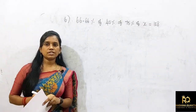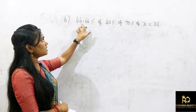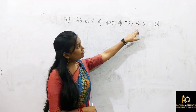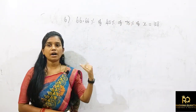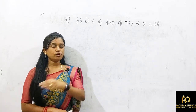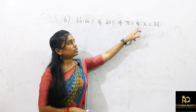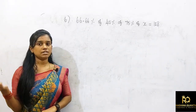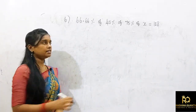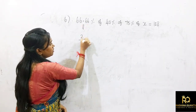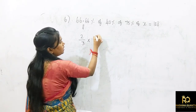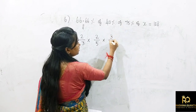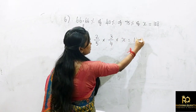Next question: 66.66% of 40% of 75% of x equals 108. Convert to equivalent fractions: 66.66% = 2/3, 40% = 2/5, 75% = 3/4. So 2/3 × 2/5 × 3/4 × x = 108. Cancel: 3 and 3 cancel, 2 and 2 give 4, the 4 cancels. We get x divided by 5 = 108.